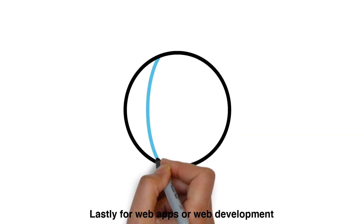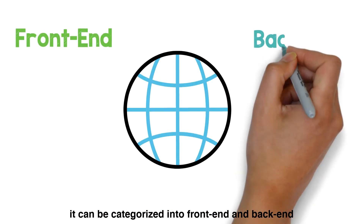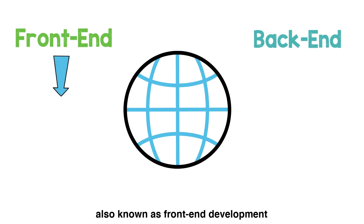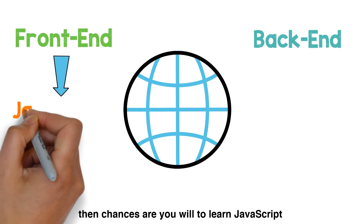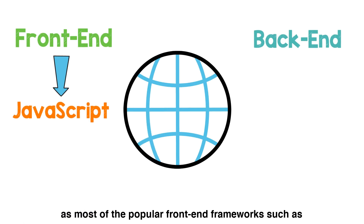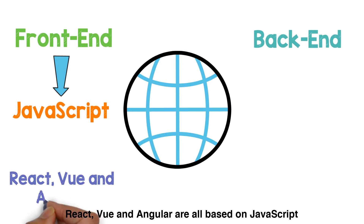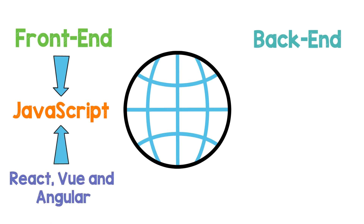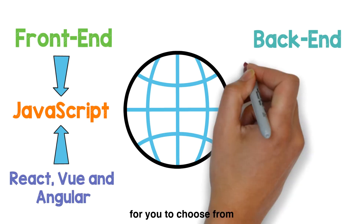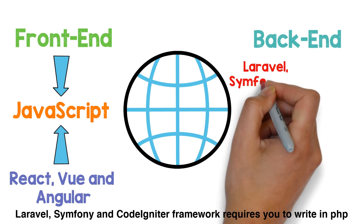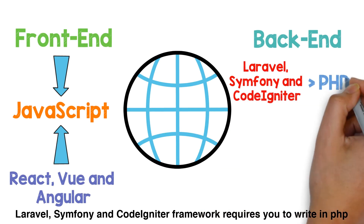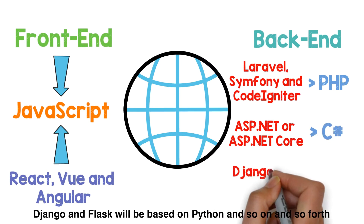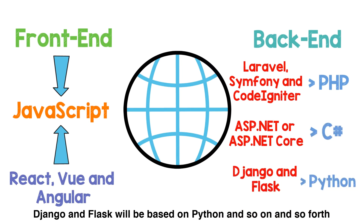Lastly, for web apps or web development, it can be categorized into front-end and back-end. If you are more interested in dealing with the look and feel of your site, also known as front-end development, then chances are you will need to learn JavaScript, as most of the popular front-end frameworks such as React, Vue, and Angular are all based on JavaScript. However, if you are more into back-end development, there are quite a handful of different frameworks. For example, Laravel, Symfony, and CodeIgniter require you to write in PHP; ASP.NET or ASP.NET Core will be based on C Sharp; Django and Flask will be based on Python, and so on and so forth.